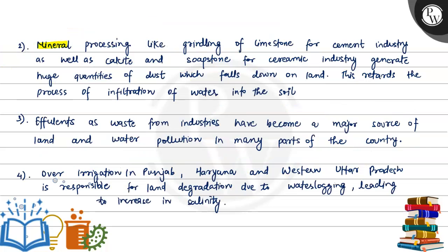The second reason is mineral processing, like grinding of limestone for the cement industry, as well as processing of gold and soapstone for the ceramic industry, which generates a huge quantity of dust that falls down on the land. This retards the process of infiltration of water into the soil. So the second main reason is grinding of limestone and mineral processing.